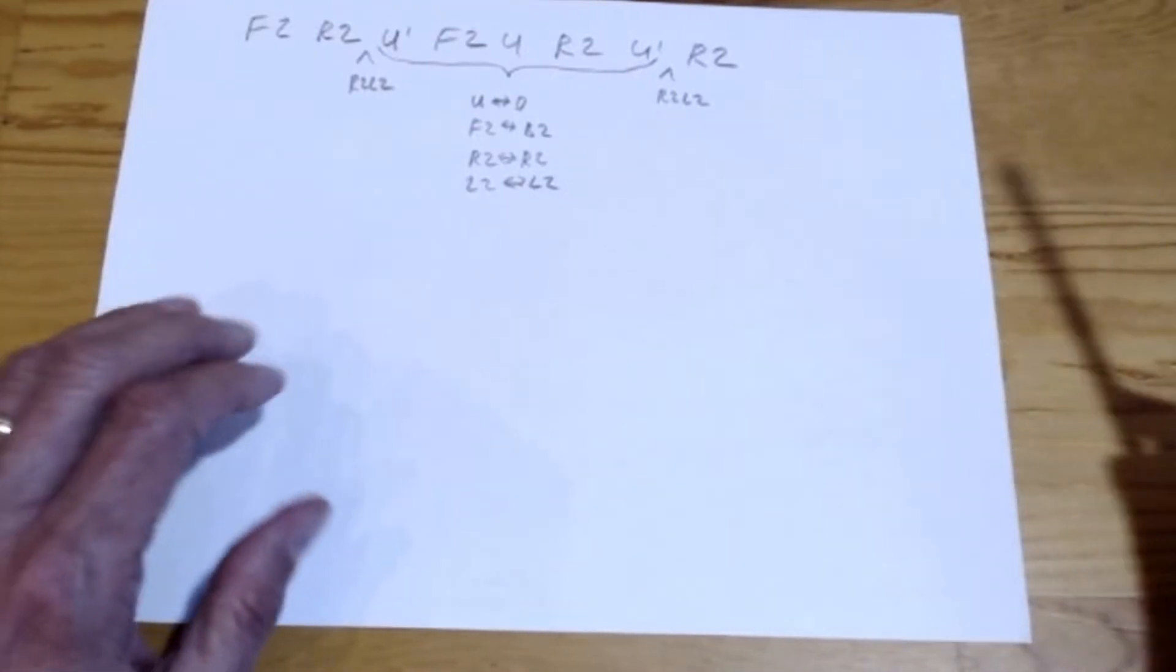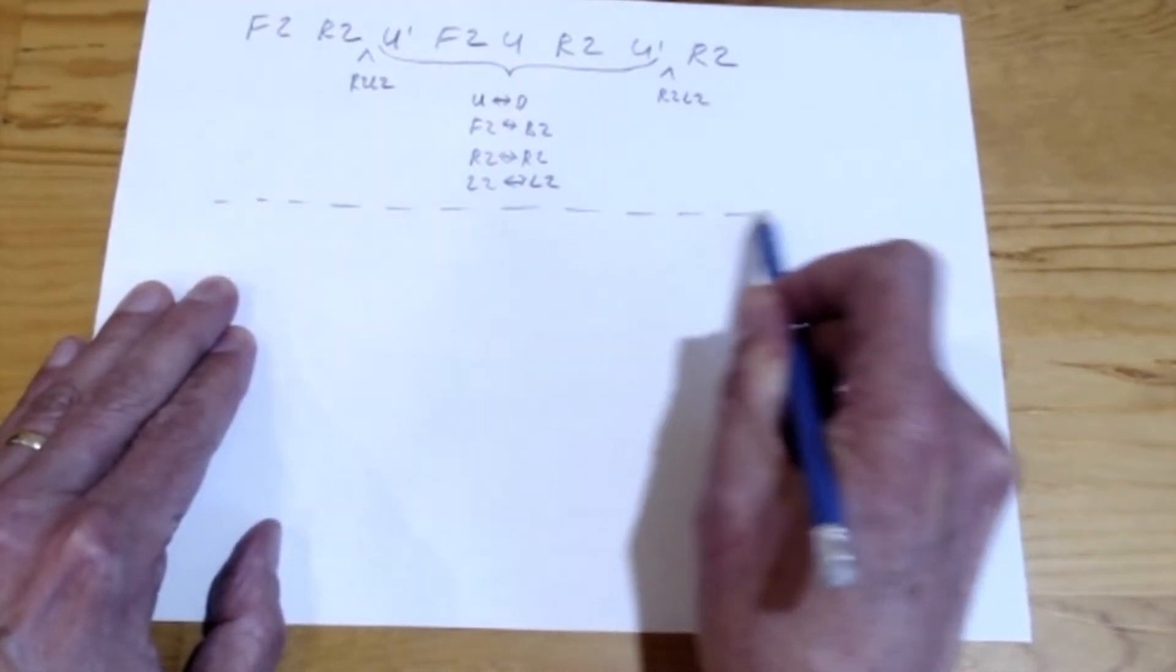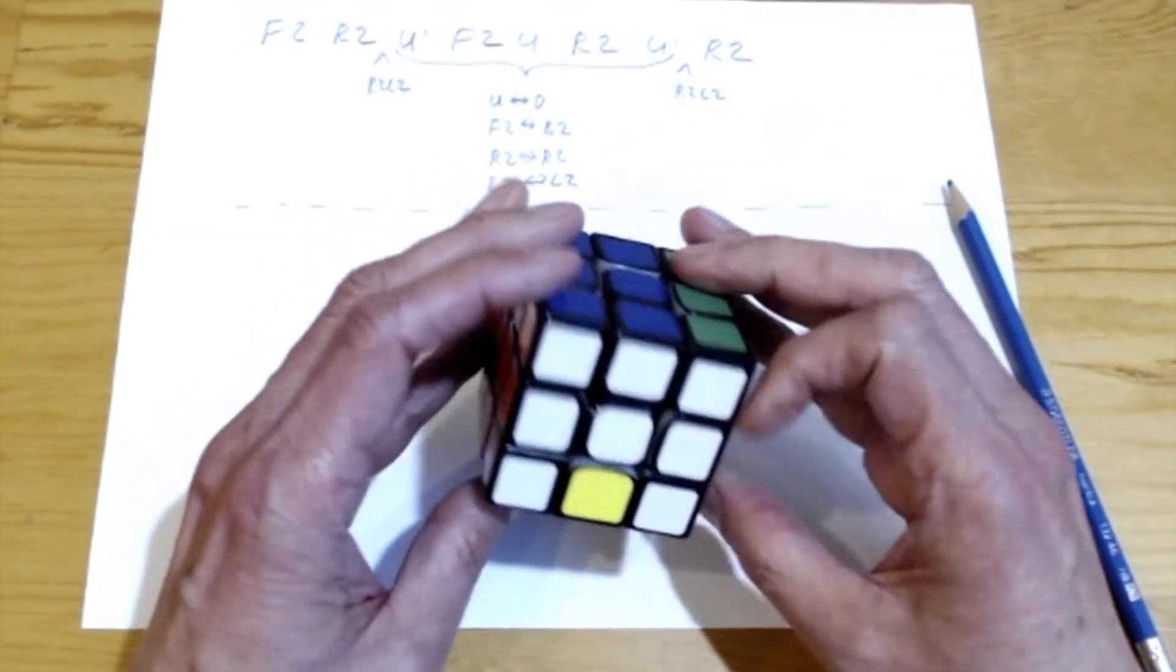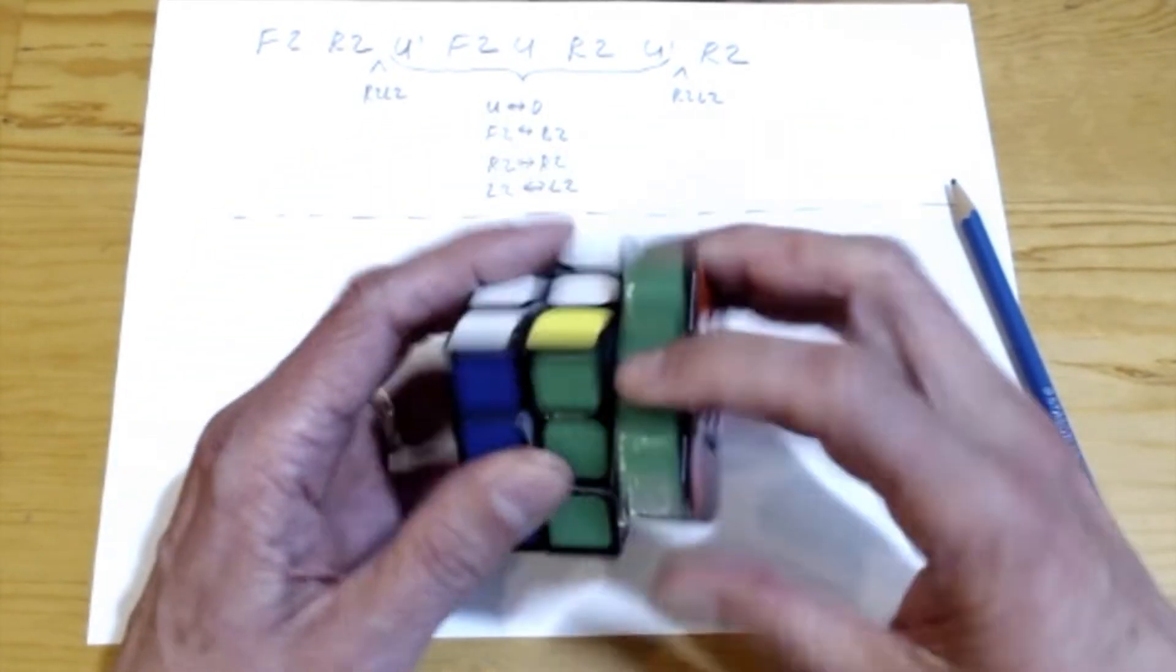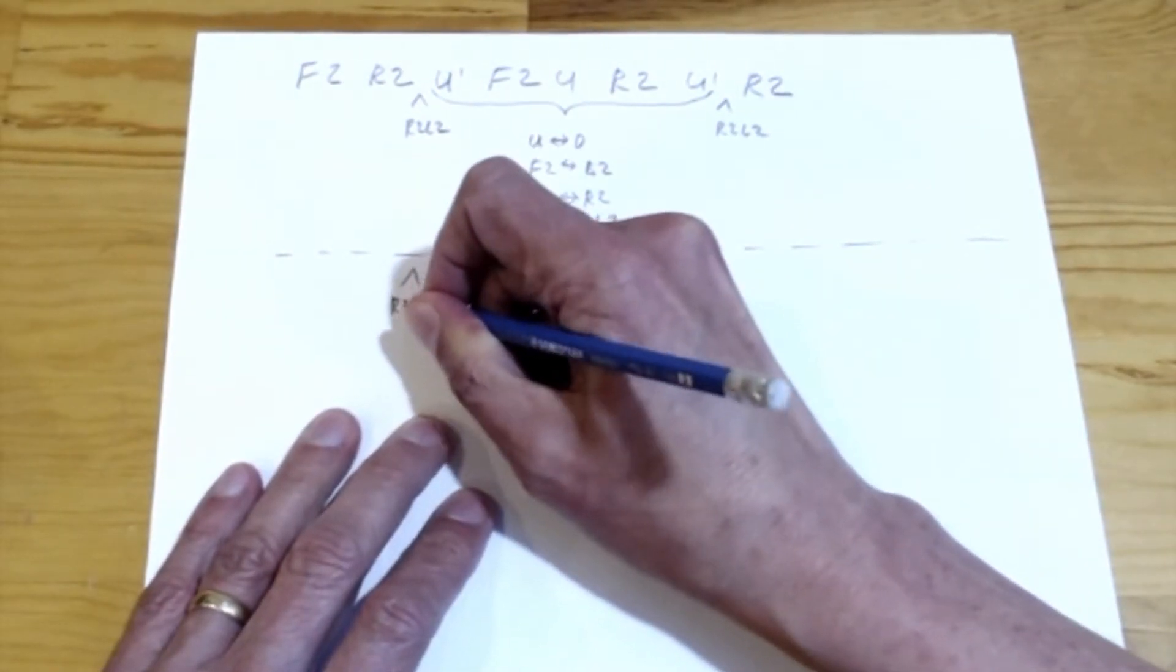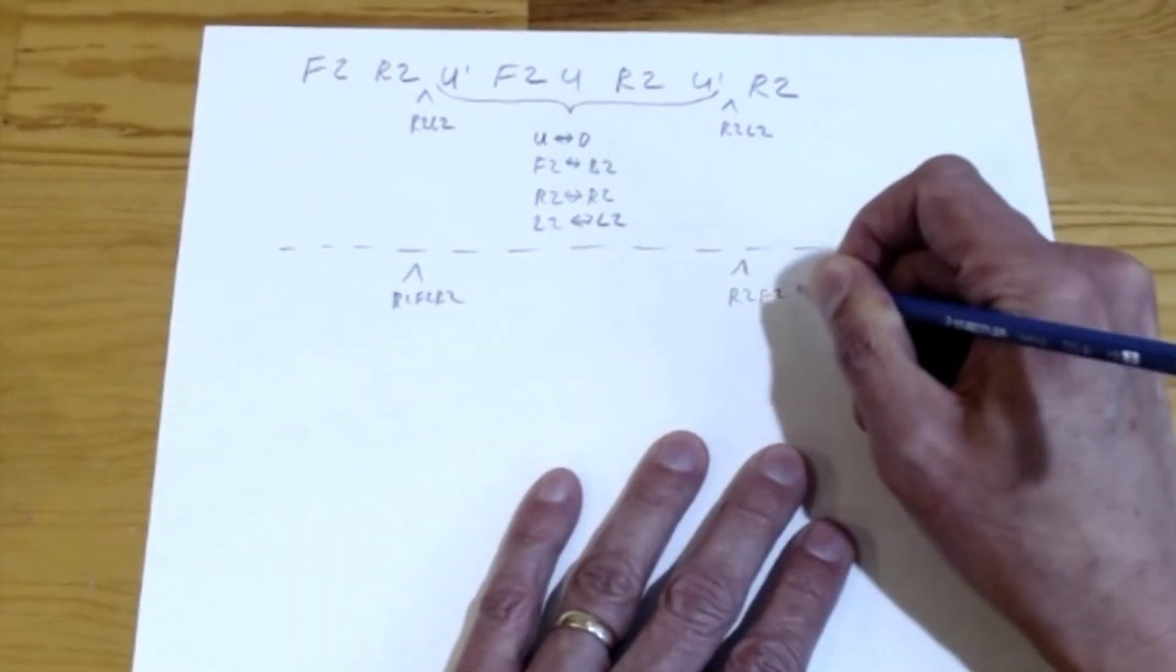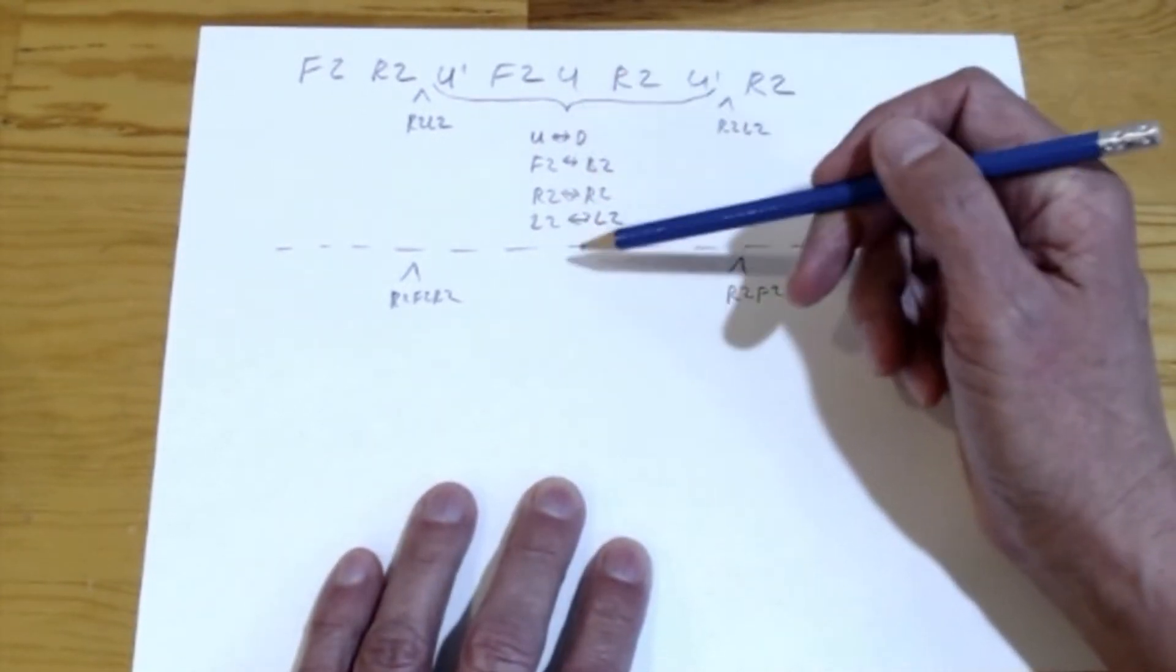So what's a corner swap insertion? A corner swap insertion works the same way, except instead of inserting a slice, I insert a corner swap. A corner swap is R2 F2 R2. That swaps these two corners, and it swaps these two corners. So the way that works is I insert R2 F2 R2 here, I insert R2 F2 R2 here, and then I apply a transform in the middle.